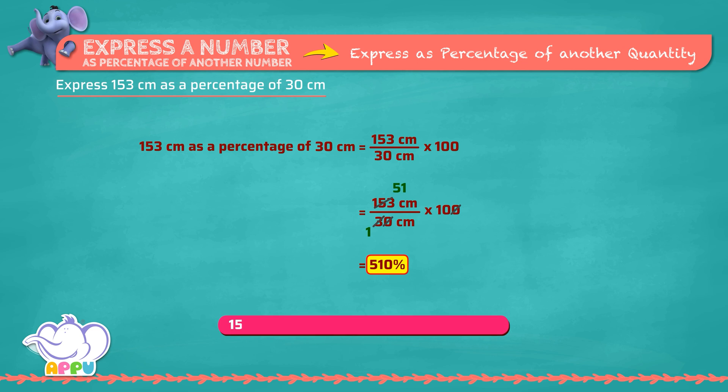So, 153 cm as a percentage of 30 cm is five hundred and ten percent. How nice!